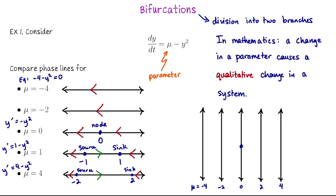Left to right, we want to put these in ascending order for mu — so on the left we have mu equals negative four, and on the right we finish with mu equals four. Now I'm going to plot my equilibrium solutions on these lines. I don't have any on the first two lines, but there's one at y equals zero when mu equals zero, so I'll put that node there. When mu equals one, we get the two at plus and minus one; and when mu equals four, we had two again at plus and minus two. Then I'm going to draw arrows down if dy/dt is decreasing and up if dy/dt is increasing.